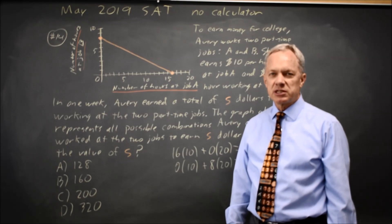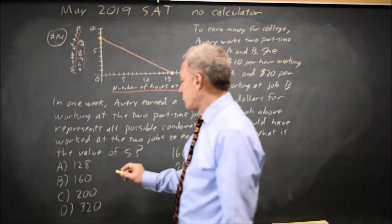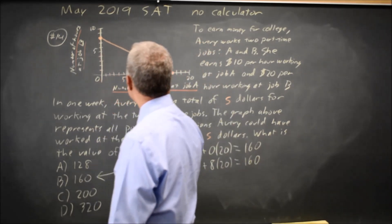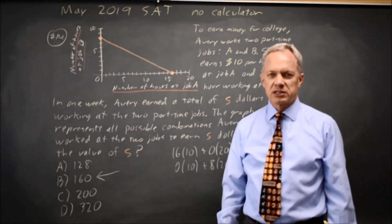At both points it was 160, which confirms that I didn't plug in the wrong numbers in the wrong spot. The correct answer would be B. For any point along this line, the total pay between the two jobs will be $160.